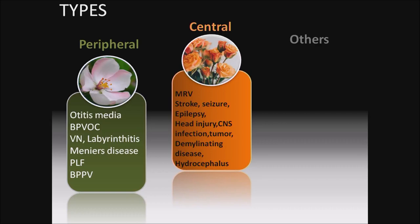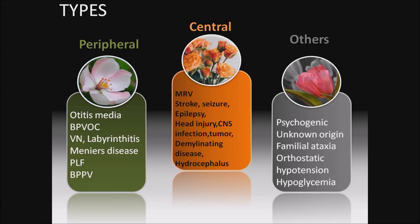Central types: migraine-related vertigo is most common in children, followed by stroke, seizure, epilepsy, head injury, CNS infection, tumor, demyelinating disease, and hydrocephalus. Others include psychogenic vertigo — again most common in children — vertigo of unknown origin, familial ataxia, orthostatic hypotension, and hypoglycemia.